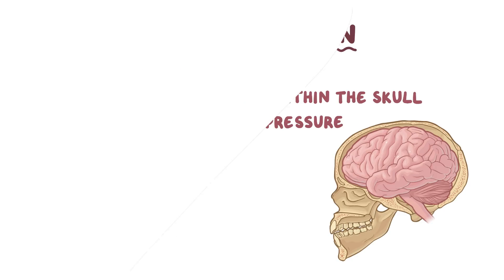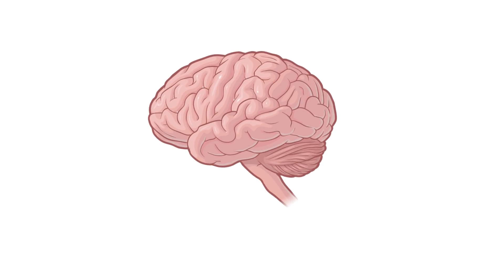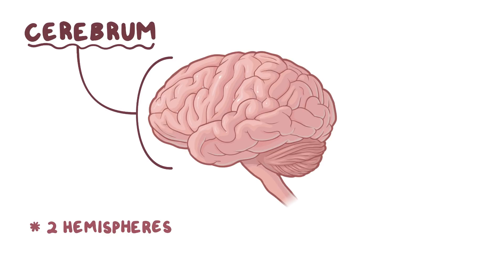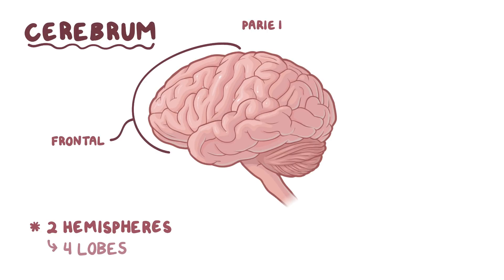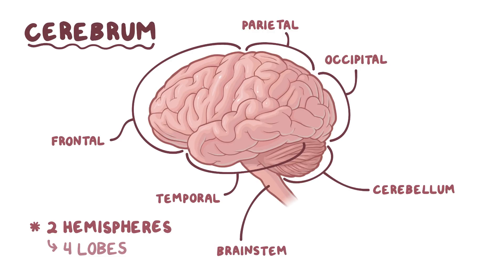Let's start with some basic brain anatomy. The brain has a few regions. The most obvious is the cerebrum, which is divided into two cerebral hemispheres, each of which has a cortex, or an outer region, divided into four lobes, including the frontal lobe, parietal lobe, temporal lobe, and the occipital lobe. There are also additional structures, including the cerebellum, which is down below, as well as the brain stem, which connects to the spinal cord.